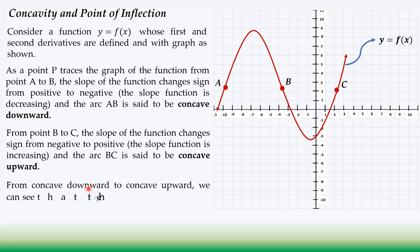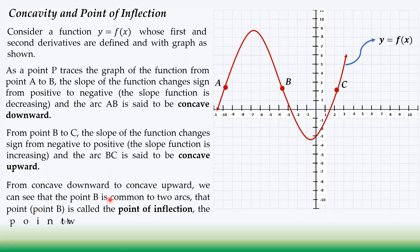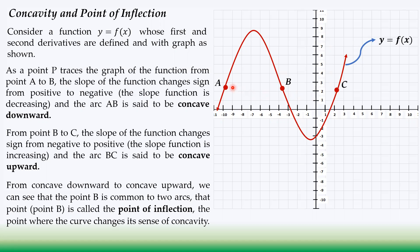From concave downward to concave upward, we can see that point B is common to both arcs AB and BC. This common point is called the point of inflection — it is the point where the curve changes its sense of concavity, going from concave downward to concave upward.